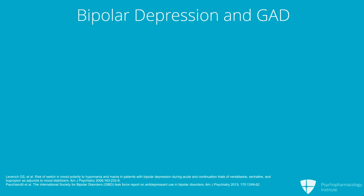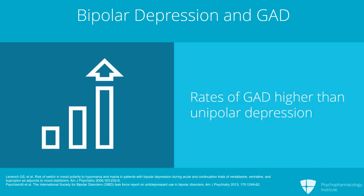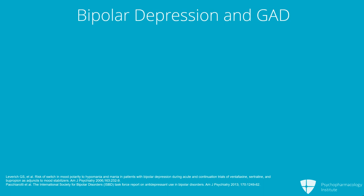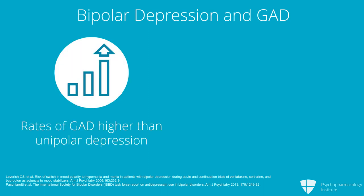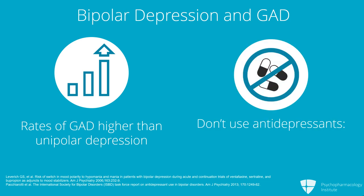The next disorder that could change your algorithm is bipolar depression. In fact, rates of GAD are higher in bipolar depression compared to unipolar depression, so you'll see this a lot. Antidepressants are normally effective for GAD, such as SSRIs, but we do not recommend them for bipolar depression — especially if patients are rapid cyclers or in mixed states, with rapid cycling defined as more than four episodes a year.